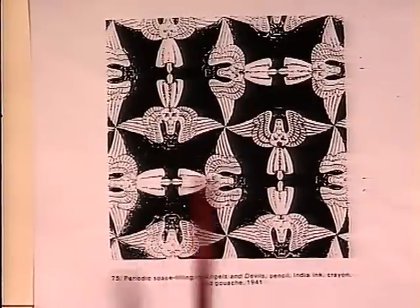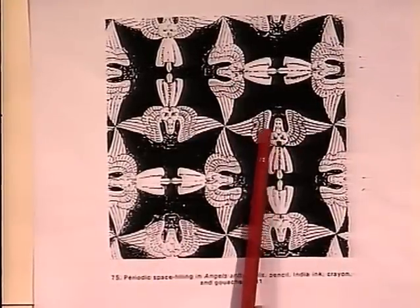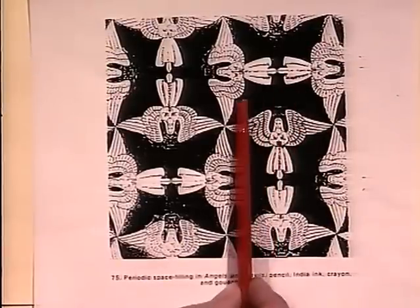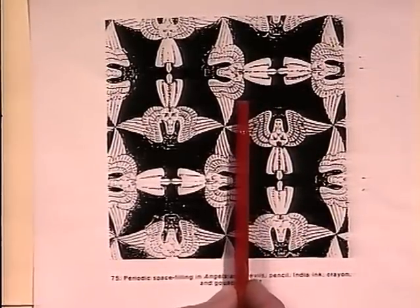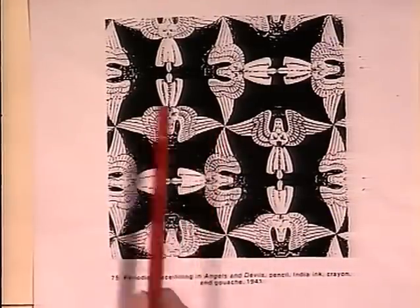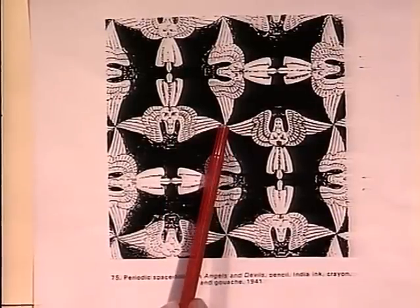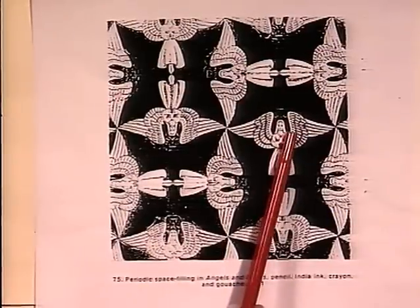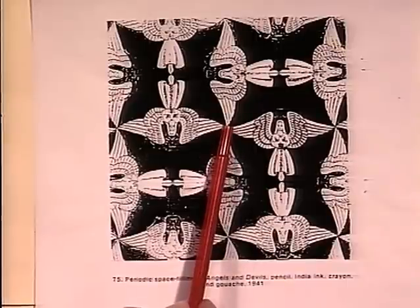Another way in which we see patterns in art is through the work of the Dutch graphic artist M.C. Escher. Here is an example of one of his pictures of angels and devils, which also exhibits all the features of a wallpaper pattern. We see a pattern made up of the angels in white and devils in black, interlocking together to give us a repeating pattern. This picture has a four-fold symmetry: if we think of this as the center of rotation, this angel would go to this one, this angel to this one, and so on.